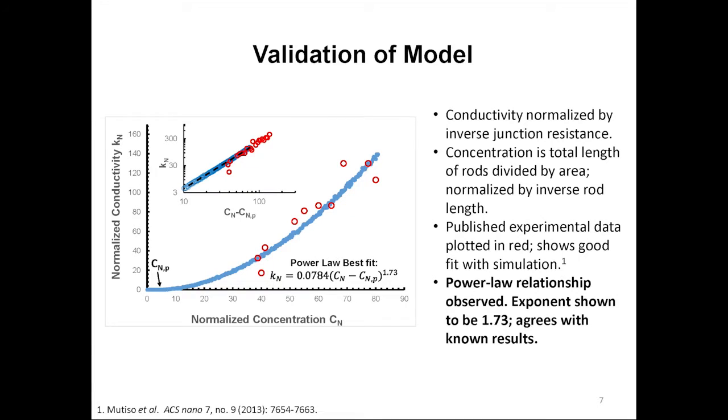Before I could use my model to investigate the effects of orientation, I first needed to verify its accuracy. In this plot, normalized conductivity is shown as a function of normalized concentration. Raw conductivity, measured in Siemens, is normalized by multiplying by junction resistance, because junction resistance is the dominant resistor type. Raw concentration, defined as total length of rods divided by area, is normalized by the length of each piece. Data points in blue come from my computational model, while data points in red come from a published experimental study. As you can see, particularly on the inset log-log scale, my model has very good fit with the published experimental data. I observe a parallel relationship between normalized concentration and normalized conductivity with a critical exponent of 1.73; the accepted value for the critical exponent is 1.75. This validates the use of my model in investigating the effects of orientation on conductivity.